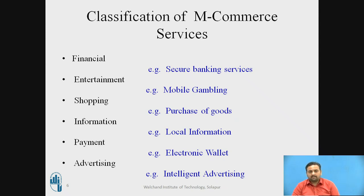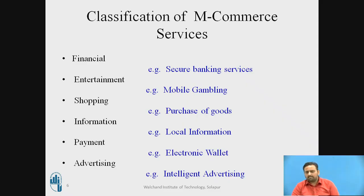The next category is payment, where you make payments to a particular person, retailer, or anybody, all over the world using M-commerce. The final category is advertising — intelligent advertising is one of the key categories of M-commerce.